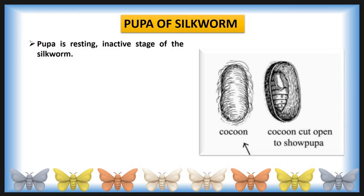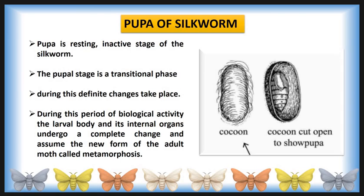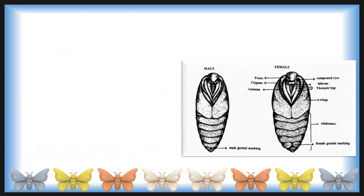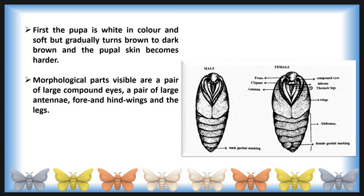The pupa is a resting and inactive stage of the silkworm. The pupal stage is a transitional phase during which definite changes take place. During this period of biological activity, the larval body and its internal organs undergo a complete change and assume the new form of the adult moth — a process called metamorphosis, meaning a drastic change occurs from the larval condition. First, the pupa is white in color and soft, but gradually turns brown to dark brown and the pupal skin becomes harder.